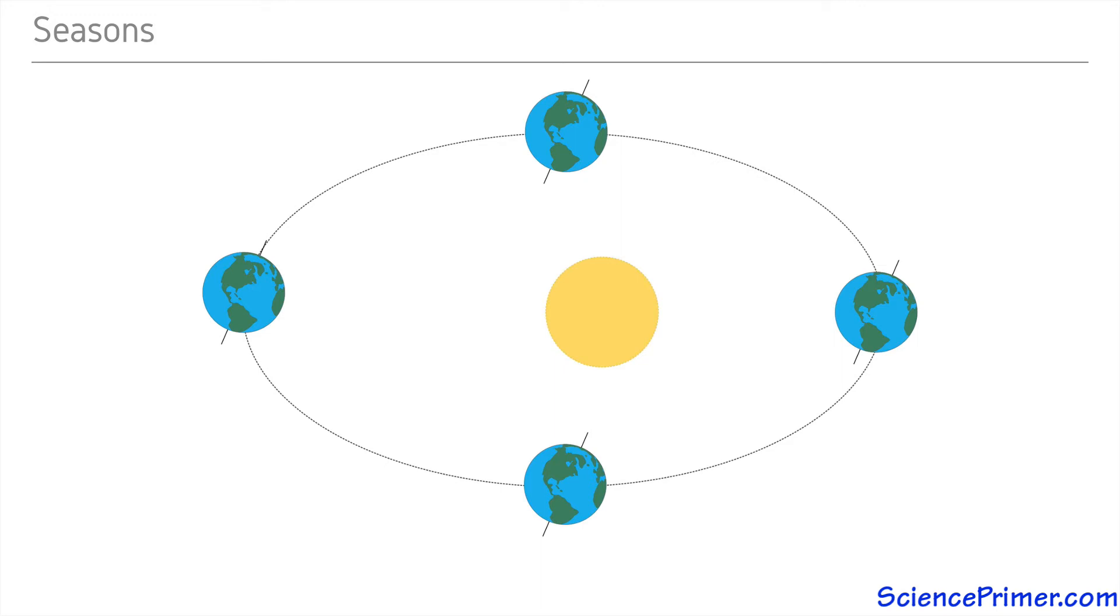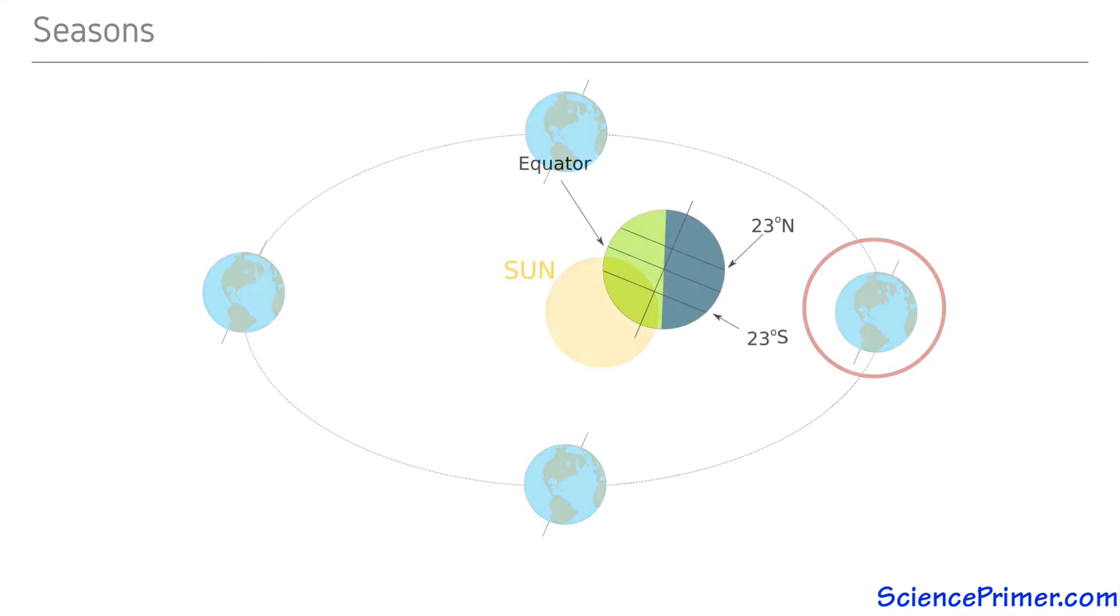Because as the Earth orbits the sun, the tilt causes the point closest to the sun to change. At the point in the orbit where the tilt causes the northern hemisphere to be pointed away from the sun, a line along 23 degrees south latitude is closest to the sun. This is the southern hemisphere's summer.